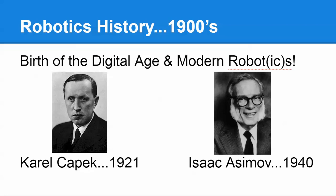Jumping ahead over a hundred years to the 1900s and the digital age — modern robotics are going to be born here. Karel Čapek in 1921 was a Czech writer of science fiction who was captivated by these systems and wrote about what he called robots, which comes from the Czech word 'robota,' meaning drudgery or slave-like labor. Then Isaac Asimov in 1940 gave the world the Three Laws of Robotics through his science fiction writing.